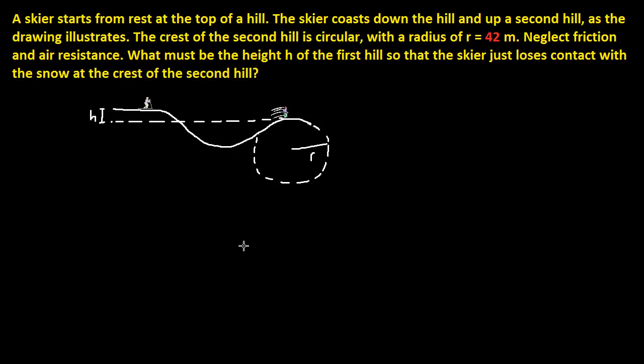Hello again, and we have a skier problem here now. It says a skier starts from rest at the top of a hill. The skier coasts down the hill and up a second hill, as the drawing illustrates.